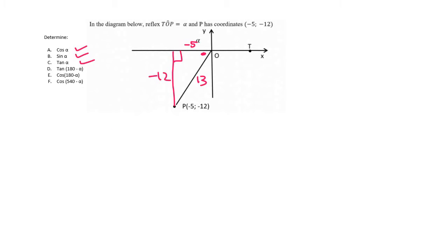Tan of 180 minus alpha, you can reduce that. So 180 minus alpha is in quadrant 2, and so that's just negative tan alpha. So it's negative of what we just got in question C. So it's going to be negative 12 over 5.